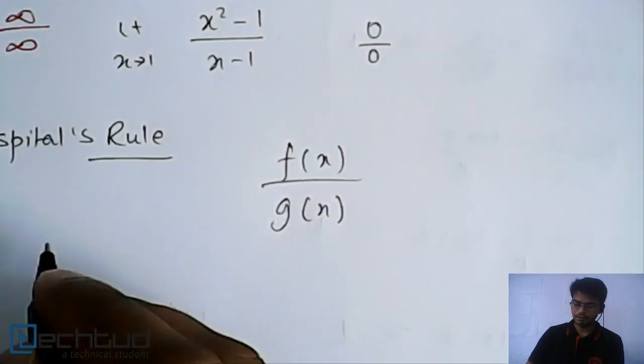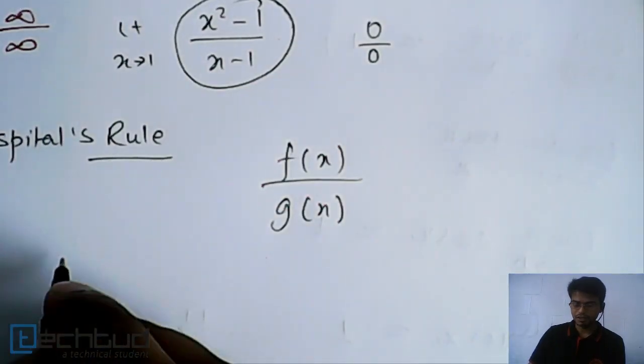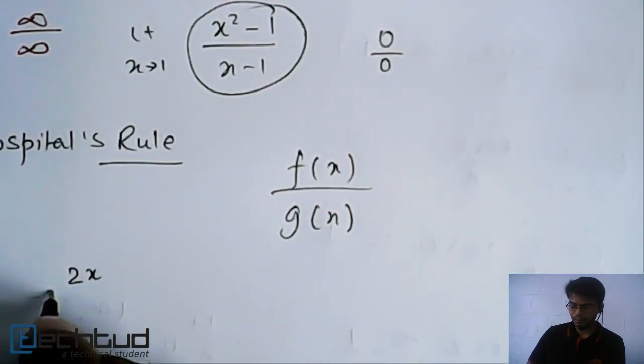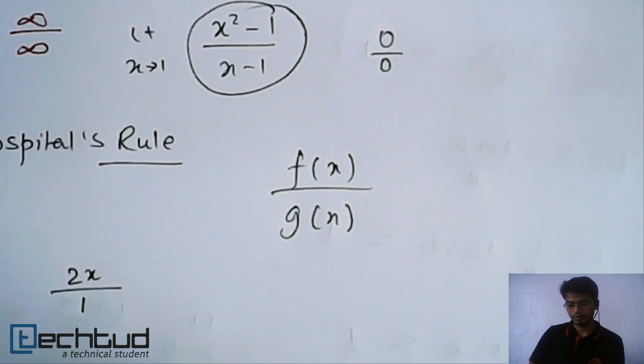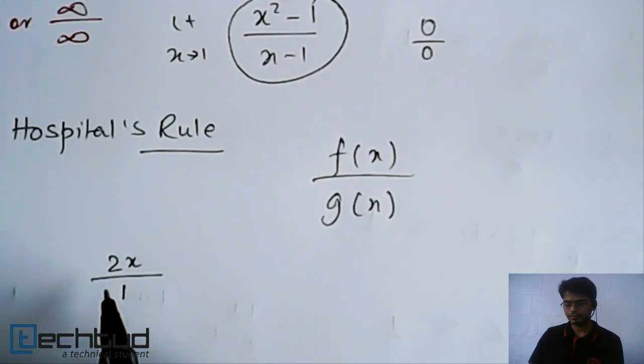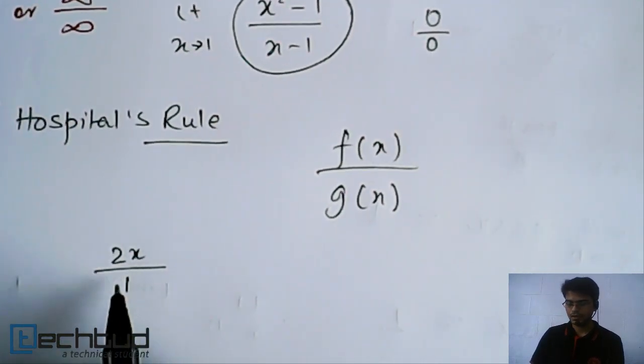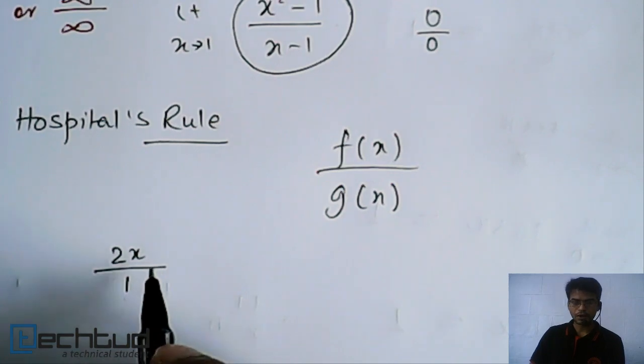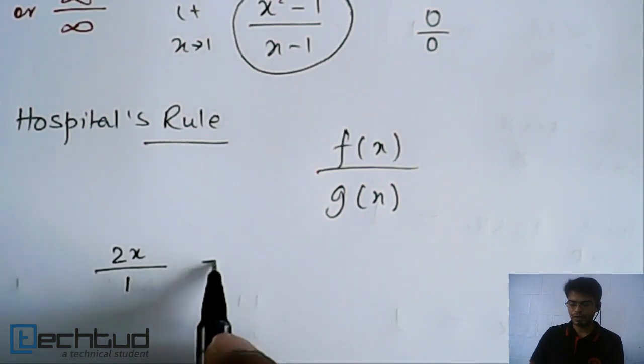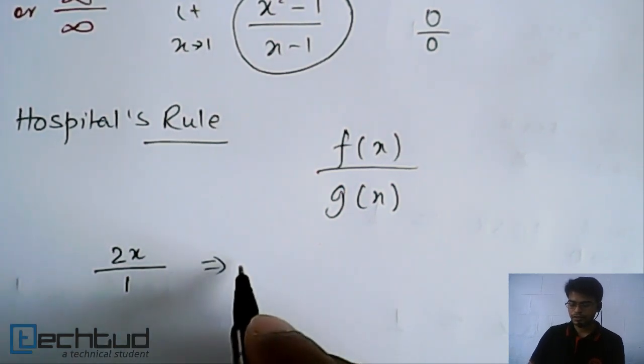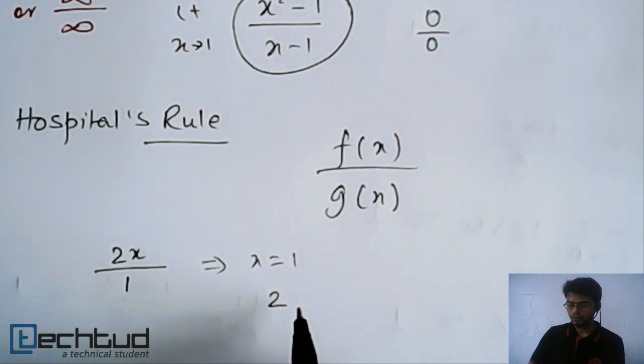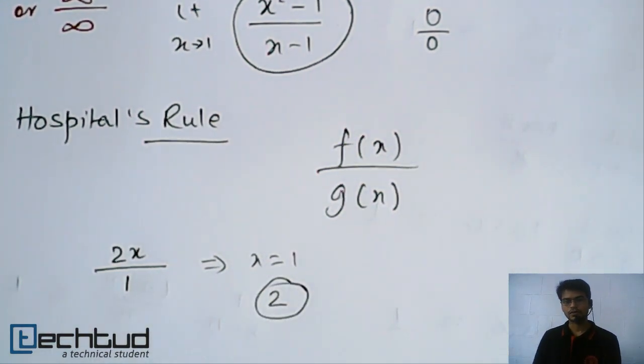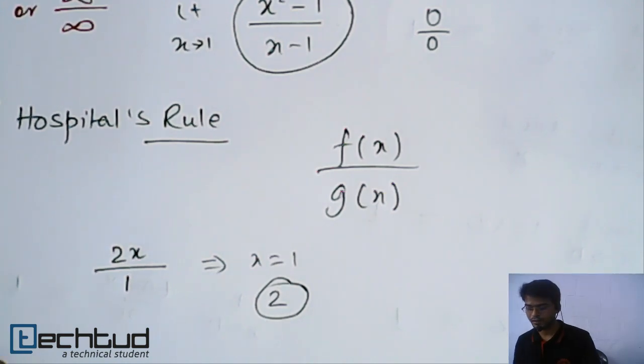Let's take this example. We will differentiate this function. So after differentiating it will come out to be 2x upon 1. So now it is not 0 by 0, right? So now, once it is out of the indeterminate form, we will put the value. So if we put the value of x equal to 1, it will come out to be 2. So now this is the limit. Very easy method.